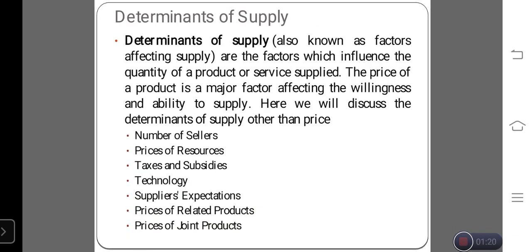The next slide is the Determinants of Supply. Determinants of Supply are also known as the factors which influence the quantity of the product supplied. The price of the product is a major factor affecting the willingness and ability to supply. We will discuss the Determinants of Supply. When you identify the price of the product, you automatically determine the supply level. So other than price, what are the determinants that will affect the supply level of the product?